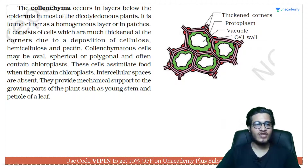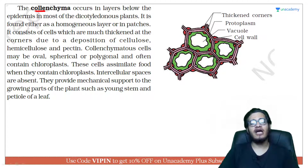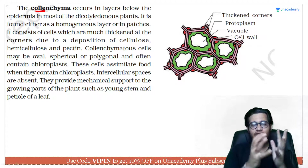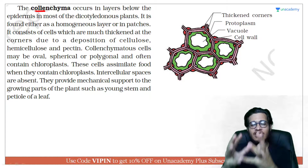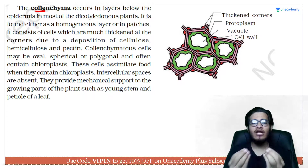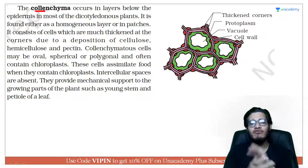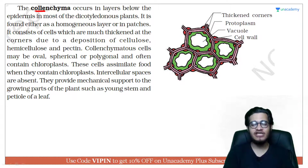So let's talk about colenchyma. In the last lecture we talked about parenchyma, whose functions were photosynthesis, storage, and secretion. The wall there was made of cellulose and was very thin, because those cells were also working in secretion.